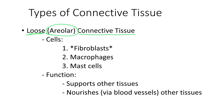The loose connective tissue has the three cells I mentioned before and some other cells, but these are the cells I would like you to keep in mind. We have in the loose connective tissue fibroblasts, and the fibroblasts are the cells that produce the ground substance.